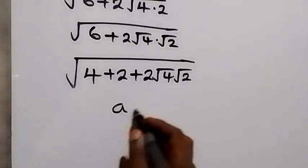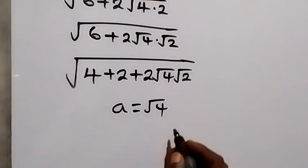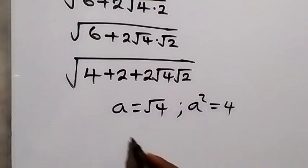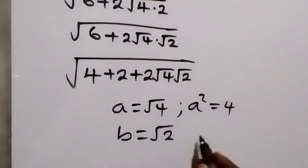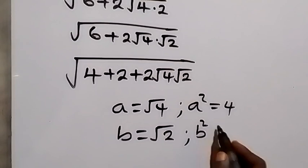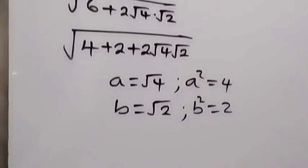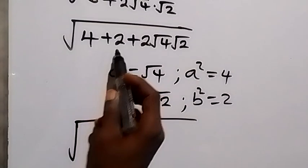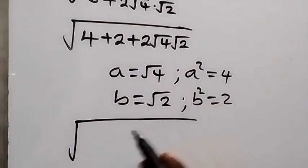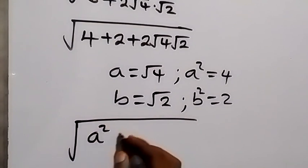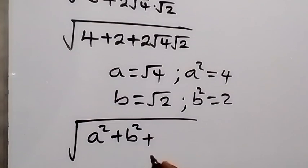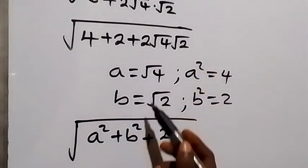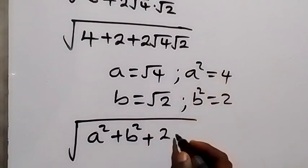From here, we let a equal root 4. Squaring both sides, a squared equals 4. We also let b equal root 2, so b squared equals 2. Then we have 4 plus 2, which is a squared plus b squared in terms of a and b. So we have a squared plus b squared plus 2ab, because we have 2 times a (root 4) times b (root 2), that is 2ab.